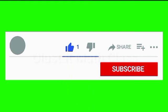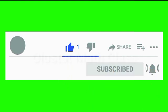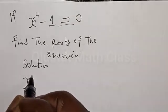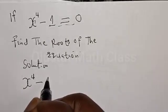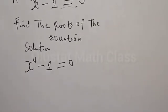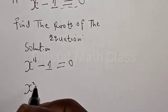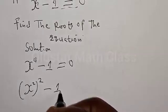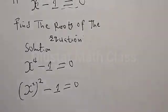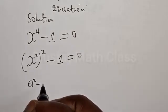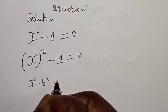Please don't forget to like, share, comment and subscribe. Solution: we have the given equation s raised to power 4 minus 1 is equal to 0. This can be expressed as (s squared) squared minus 1 is equal to 0. Now remember: if you have a squared minus b squared, it is the same thing as a plus b into a minus b.